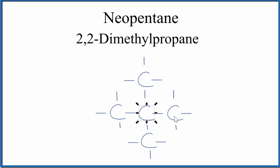We have our propane: one, two, three. And then on the second carbon here, we have two methyl groups, one and then two. So it's also 2,2-dimethylpropane.